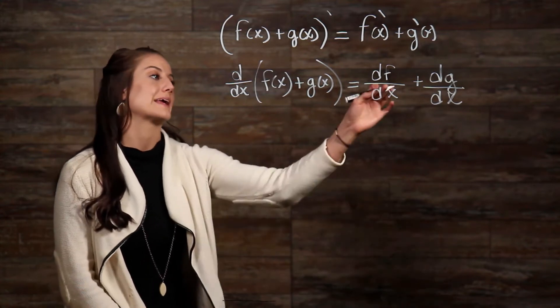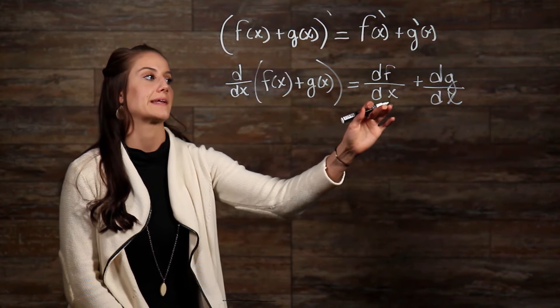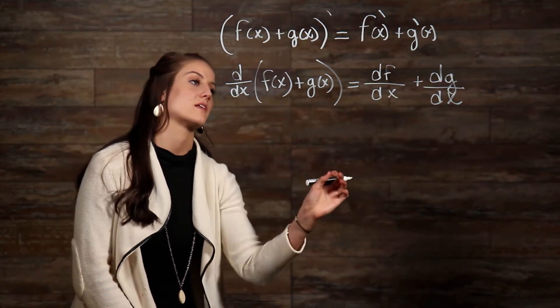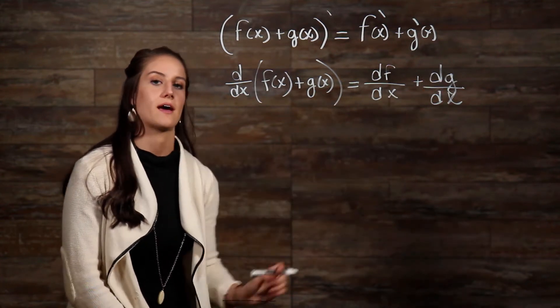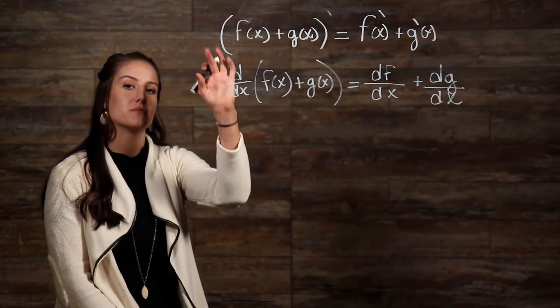Our d here just signifies that you are taking the derivative with respect to the x. Over on the right here, we can see that we've taken the derivative of f with respect to x, and we can see here that we've taken the derivative of g with respect to x. This is the same property right here.